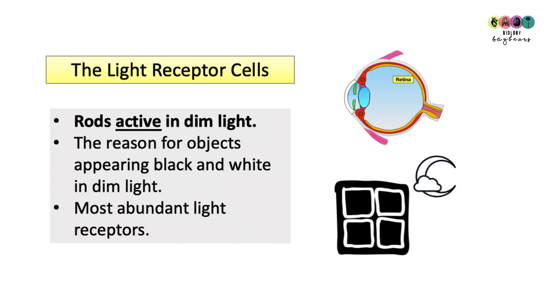So it's important to know something of the light receptor cells, the rods and the cones. The rods are active in dim light and it's the reason for objects appearing in black and white when we go into a dimly lit room or at night time. They are the most abundant of the light receptors so there's more of these than the others, the cones.